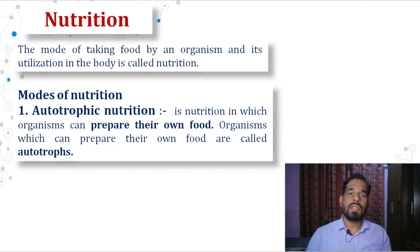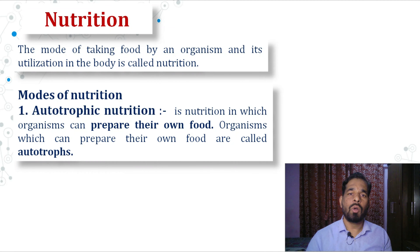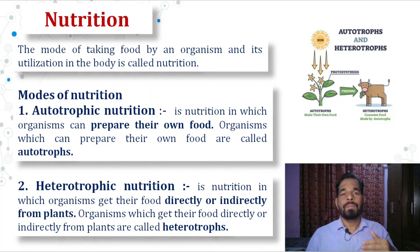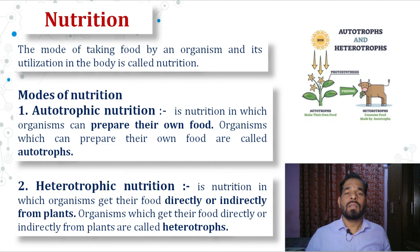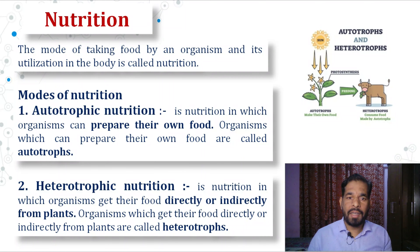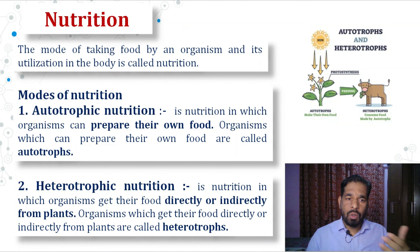Nutrition is divided into different modes. The first mode of nutrition is called autotrophic nutrition. Autotrophic nutrition means the organism has the ability to synthesize their own food. Plants have the ability to prepare their own food and therefore those are considered as autotrophs — organisms which can prepare their own food.